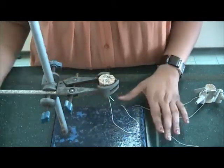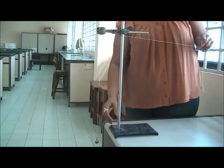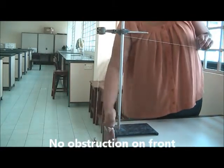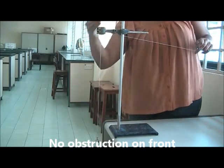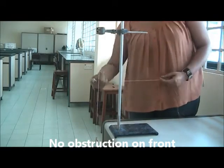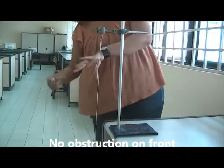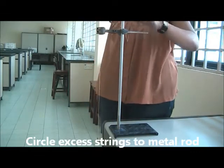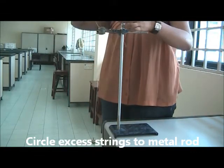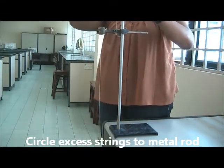This is the retort stand. The base has to be facing back so that there's no obstruction on the front like this. This is the full setup. When you have excess string, you just circle the string to the metal rod so that it doesn't get entangled when you're doing the experiment.